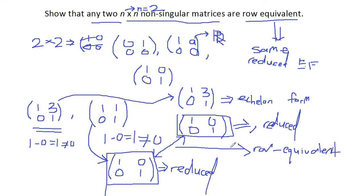Therefore we have shown that any two n times n non-singular matrices are row equivalent. Thank you for watching my video. If you have any questions feel free to drop me a comment. Thanks so much.